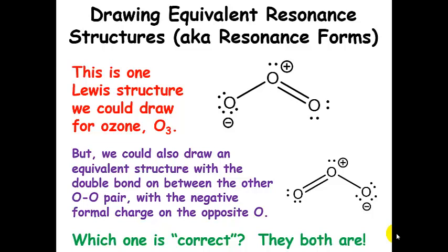Before we get started with actually drawing equivalent resonant structures, let's just review what they are. In order to review this, let's talk about ozone. Here is one Lewis structure that could be drawn for ozone.